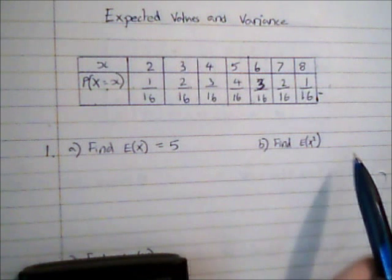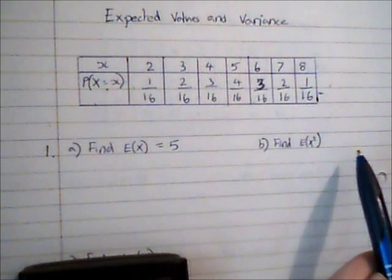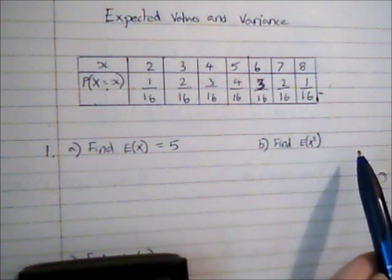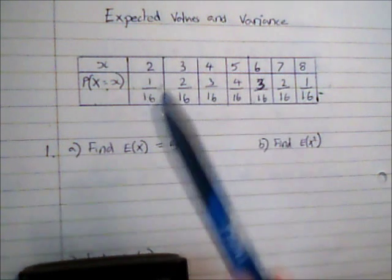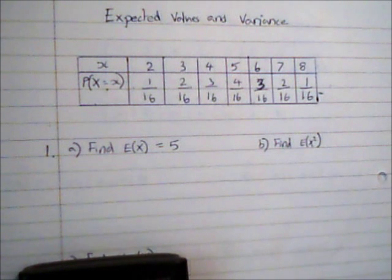Now the next value I want to find is E of x squared, and this is really useful for then calculating the variance later on. So this works in a similar way except I'm going to square each of my values before multiplying by the probability.